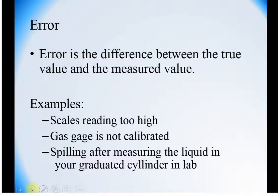In addition, we can talk about the error. Error is the difference between the true value and the measured value. You could have scales that read too high. The gas gauge might not be calibrated. One of the cars I had in high school would run out at half a tank. The idea being the fact that this wasn't calibrated caused an error in reading. In lab, you could measure out the amount of water or acid you need in a graduated cylinder, and then when you're delivering it to your beaker, you might spill it. That would be a source of error.